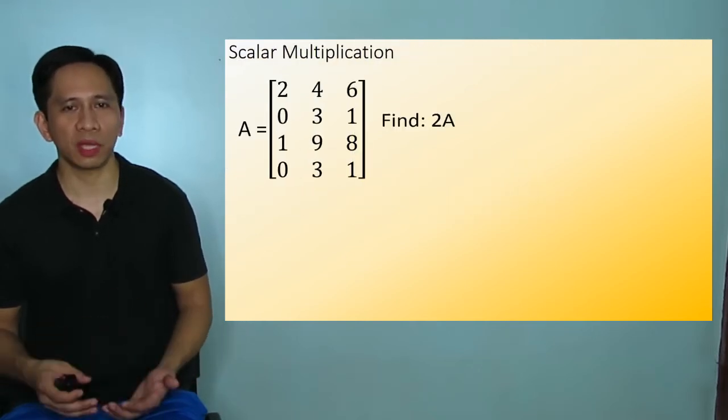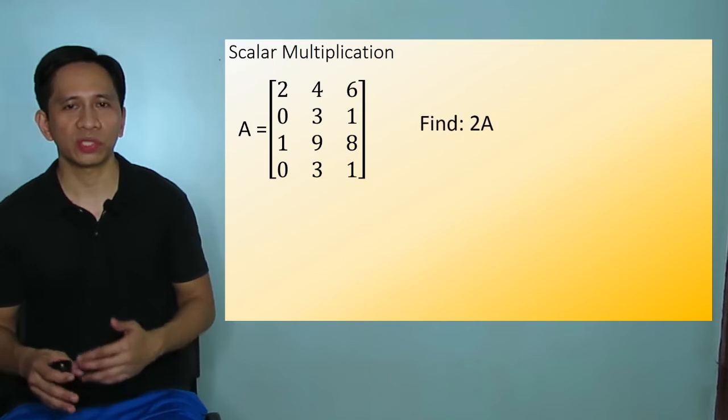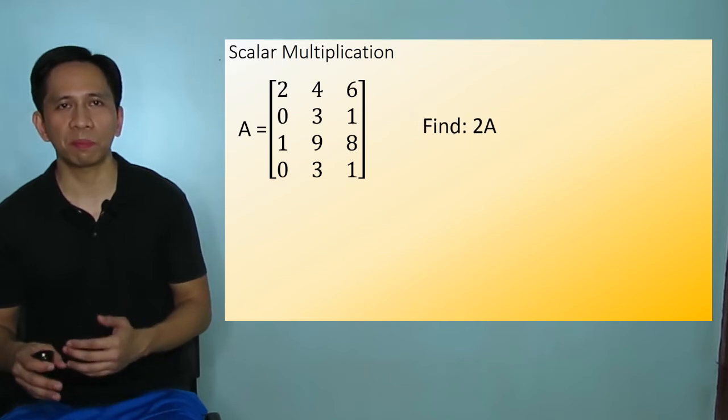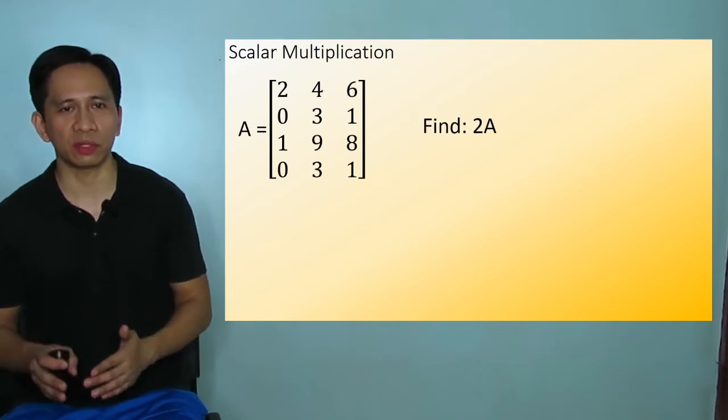For scalar multiplication, you just have to multiply each entry with the real number.